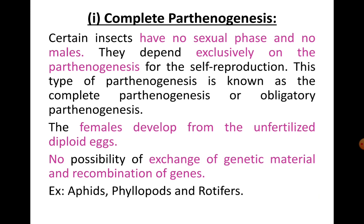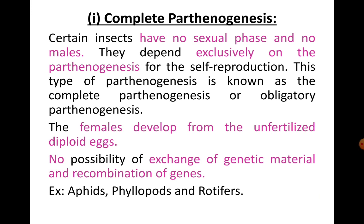In complete Parthenogenesis, certain insects have no sexual phase and no males, so they depend exclusively on Parthenogenesis for self-reproduction. This is also known as obligatory Parthenogenesis. Here the females develop from unfertilized diploid eggs, and there is no possibility of exchange of genetic material and recombination of genes, as seen in aphids and rotifers.